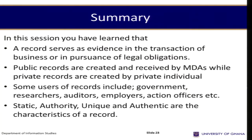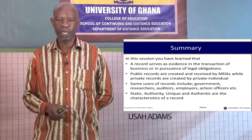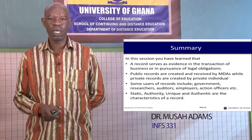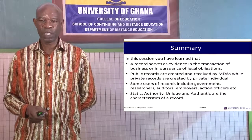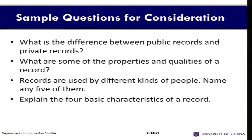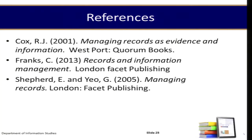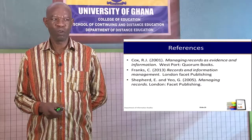In summary, a record serves as evidence in a transaction of business or in the pursuance of legal obligations. Public records are created and received by ministries, departments, and agencies, while private records are created by private individuals. Uses of records include government, researchers, auditors, employers, and action officers. The four characteristics of a record are static, authority, unique, and authentic. Sample questions include: What is the difference between public and private records? What are the properties and qualities of a record? Name five users of records. Explain the four basic characteristics. Students are encouraged to consult the provided references and credible online sources for further reading.